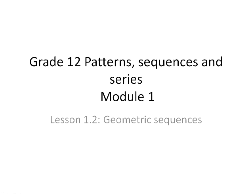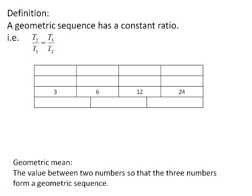Let's take a look at some geometric sequences. A geometric sequence is defined as a pattern that has a constant ratio. In other words, if I take term 2 and divide it by term 1, I will get the same result as taking term 3 and dividing it by term 2. In general, if I take a term and divide it by the term that comes right before, that will give me the same value, which we call r, the constant ratio.